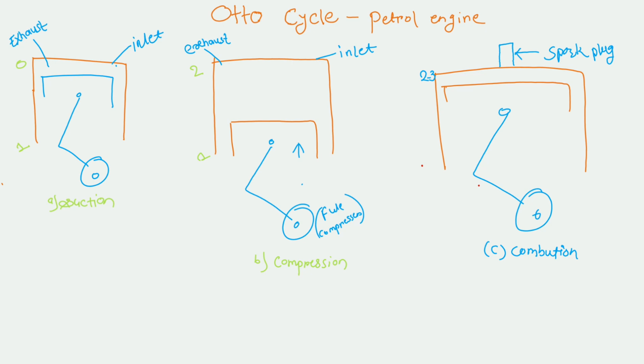The first process is suction. In suction, the piston moves from TDC to BDC — that is, from point 0 to point 1. An inlet valve is opened, by which the air and fuel mixture comes in.